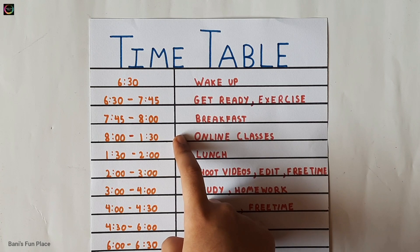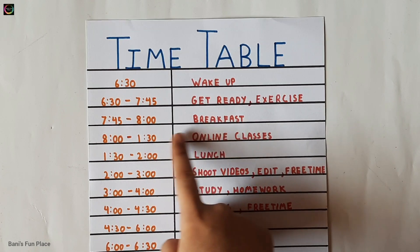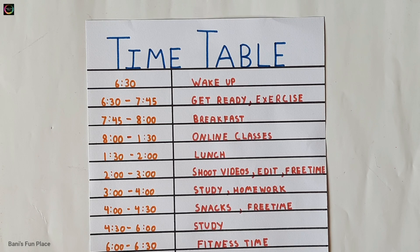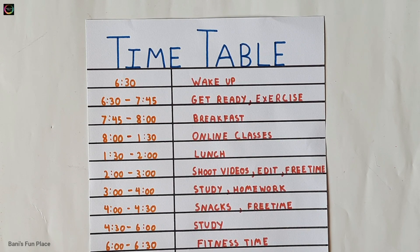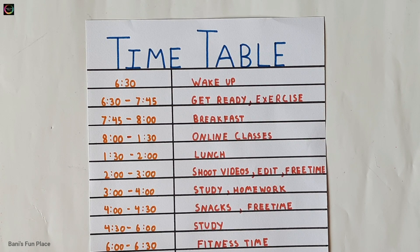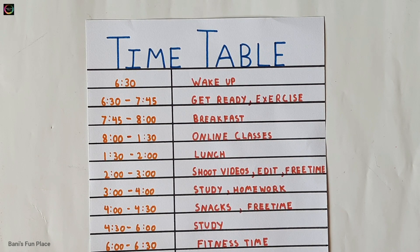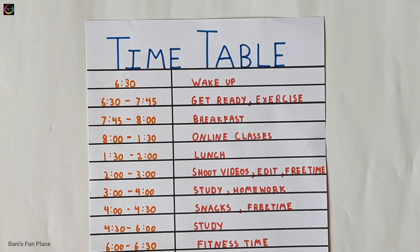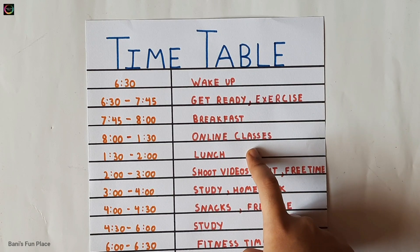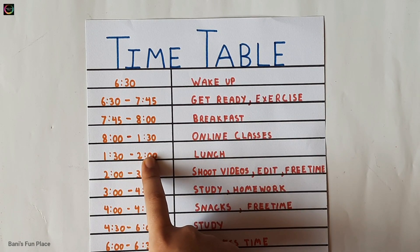Then of course I have my online classes from 8 to 1:30. This is not only one online class — I have a total of 8 online classes. That means I have half an hour classes and then a 10 minute break. For example, I have a class from 8 to 8:30, then a 10 minute break from 8:30 to 8:40, and then one more half an hour class. So like that I have 8 classes. Then I have my lunch from 1:30 to 2.